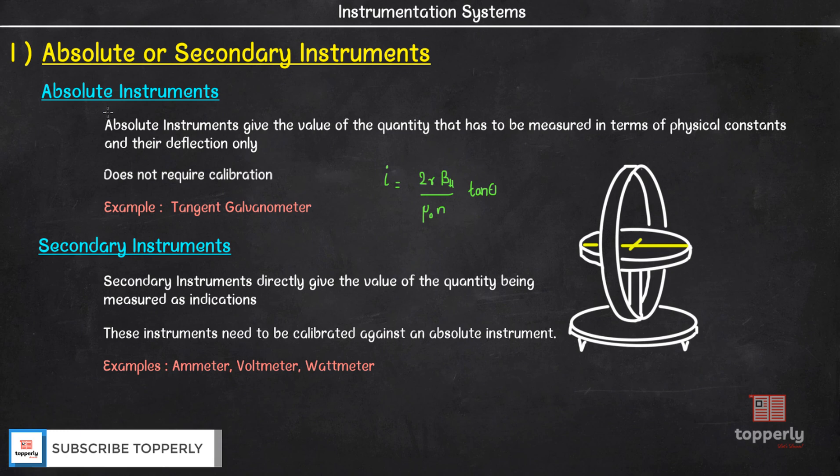These absolute instruments are seldom used except in standard institutions. This is because working with absolute instruments is time consuming as every time a measurement is made, we need to manually compute the magnitude of quantity under measurement. Due to this reason, secondary instruments are widely used in everyday work.